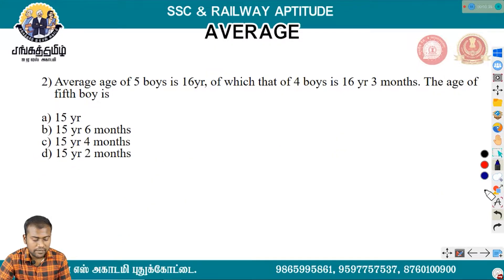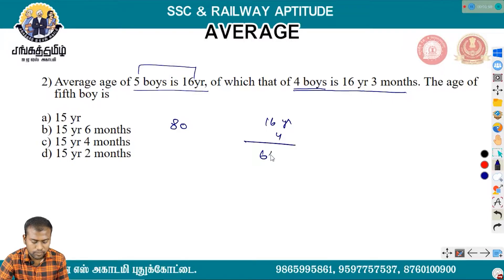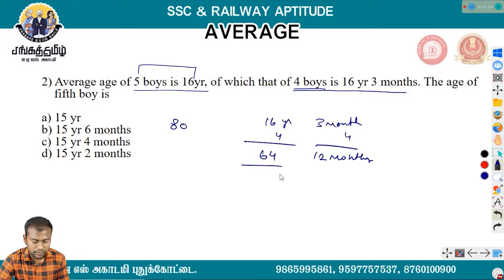The average age of 5 boys is 16 years, so the total is 80. For 4 boys, the average is 16, giving a total of 64. The remaining value after accounting for 12 months brings the total to 65.